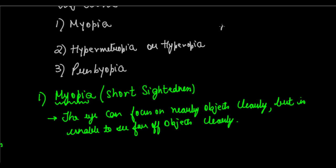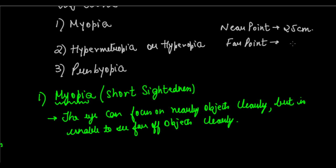There are two very important points related to the eye lens: the near point and the far point. The near point is the shortest distance at which the eye can see objects clearly — for a normal adult human being it is 25 centimeters. The far point is the farthest point till which an eye can see objects clearly — for a normal human being the far point is infinity.